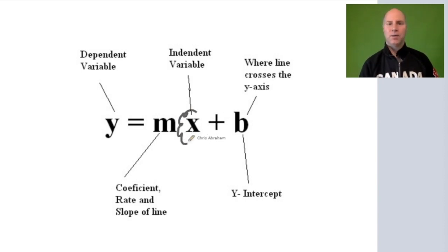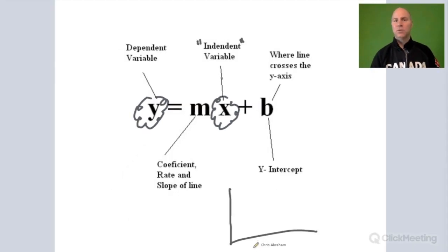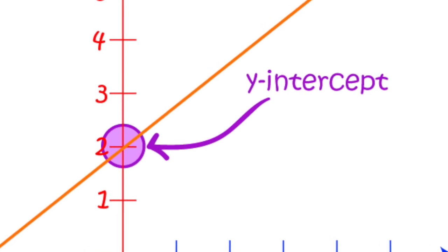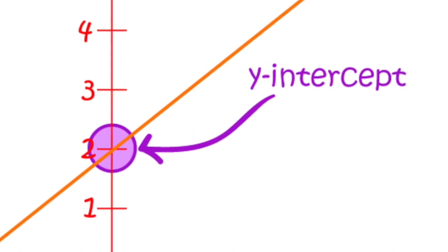We have our x variable, that's our input. We have our y variable, that's our output. The x variable is our input or independent variable. On an x and y axis, this is the value on the horizontal axis. Our y variable or output is our dependent variable. This is the value on the y axis, and the b here stands for the y intercept. This is where the line crosses the y axis when x is zero.